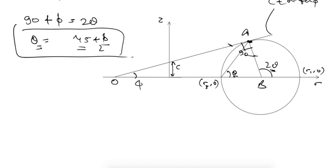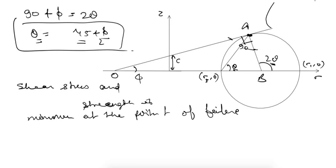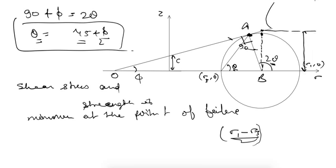We can verify this with another analysis. The difference between shear stress and shear strength is minimum at the point of failure. The point of maximum shear stress is where the maximum shear stress equals (σ1 − σ3)/2, which is the radius of the circle. However, at that point shear strength (from the envelope line) is greater than shear stress, so failure does not occur there. Failure occurs at the point where shear strength just equals shear stress.